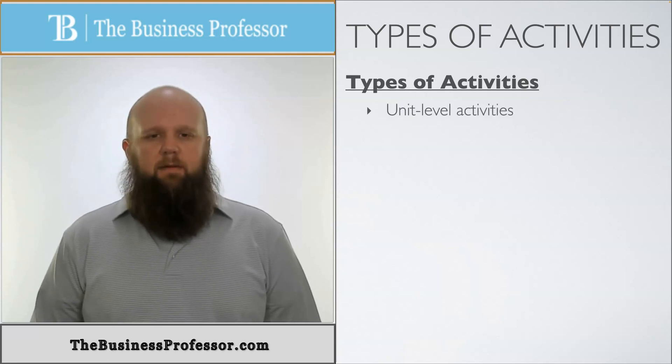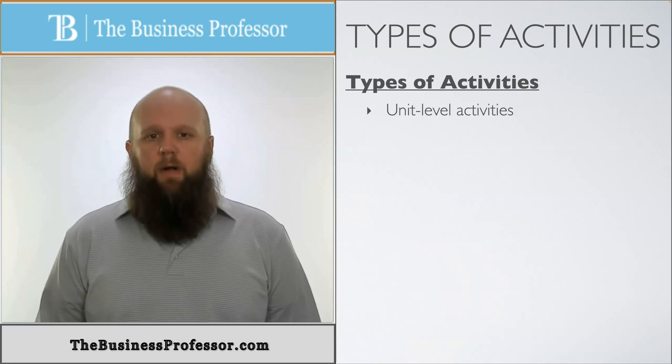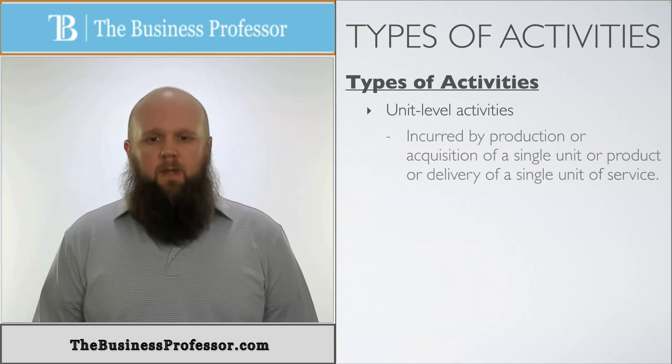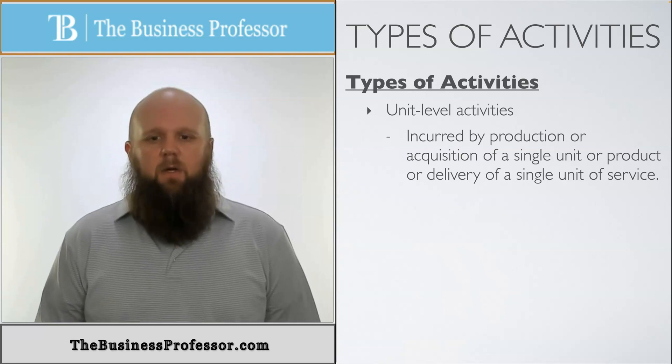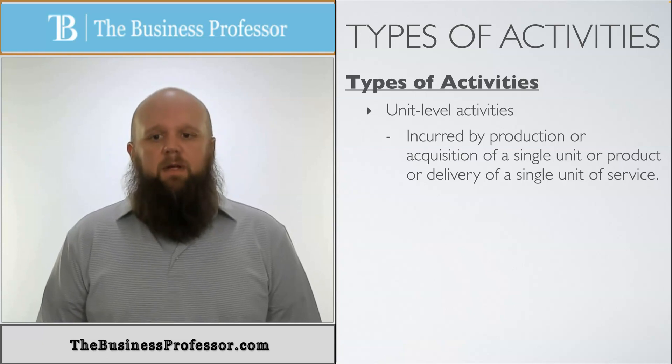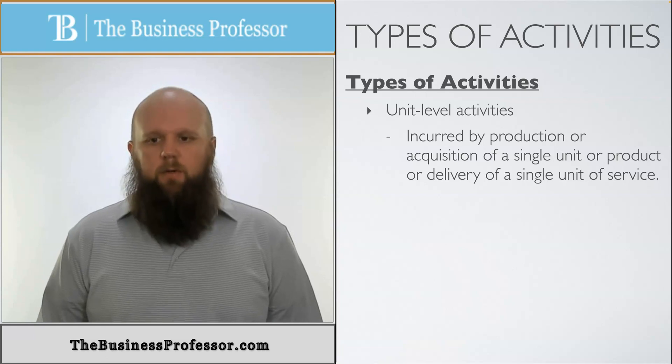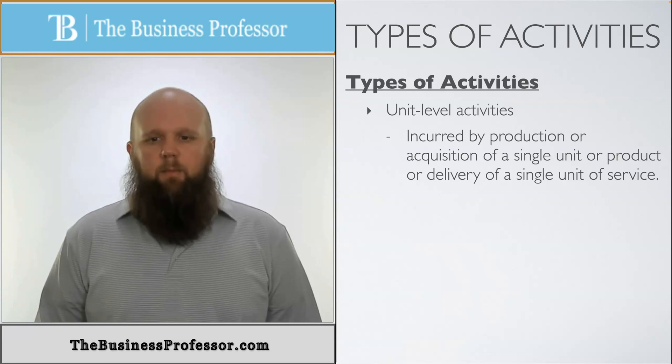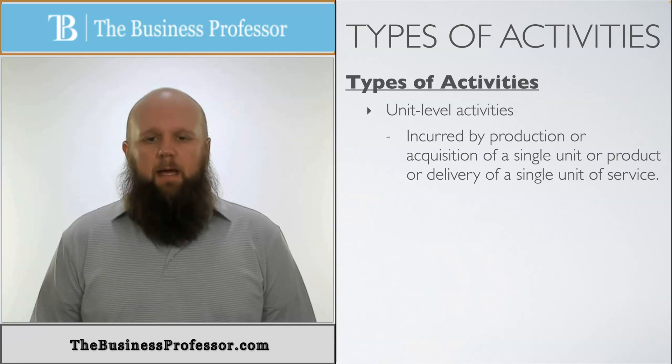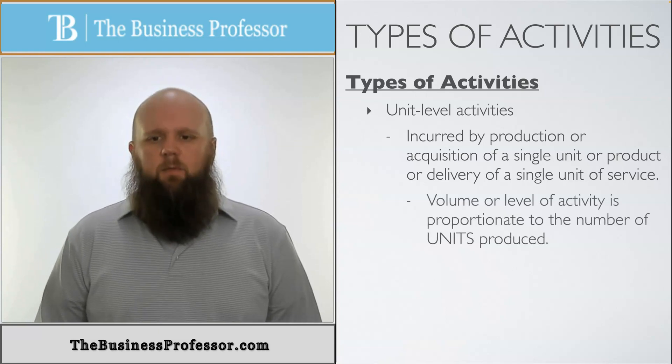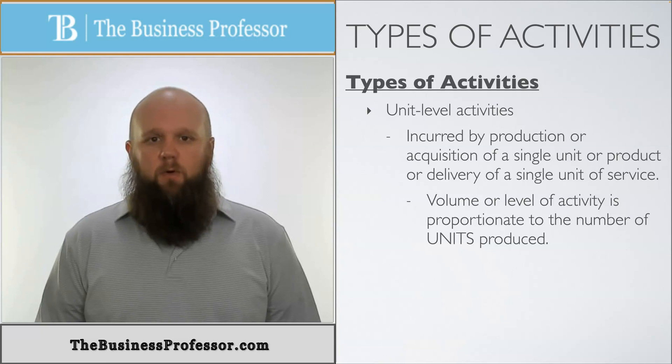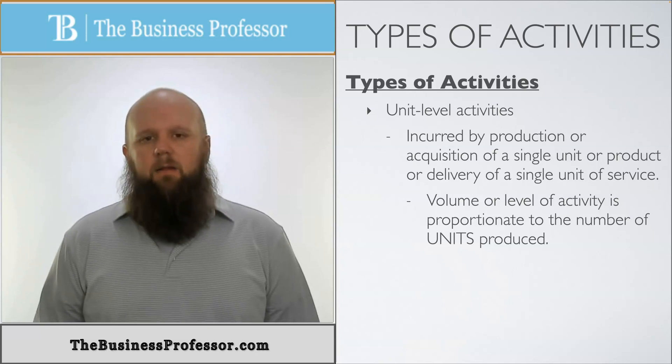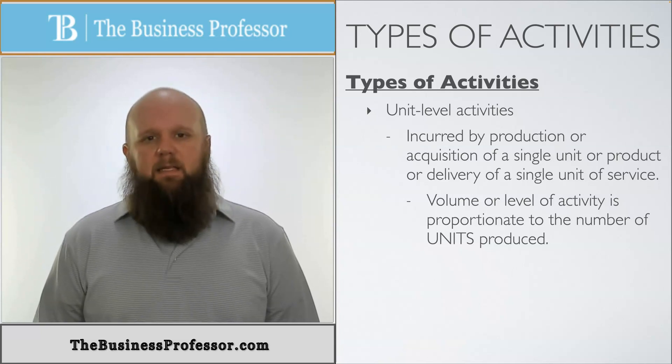The first one being unit-level activities. As the name implies, we're going to break this down into a per unit form. This is incurred by production or acquisition of a single unit or product, or delivery of a single unit of service. The volume or level of activity is proportionate to the number of units produced. So as more units are produced, the higher the cost of this type of activity is going to be.